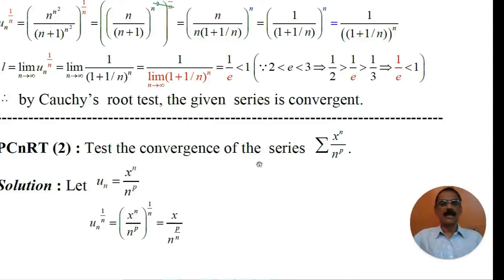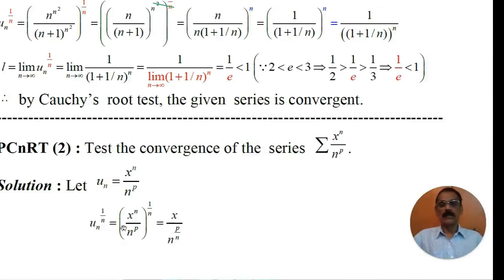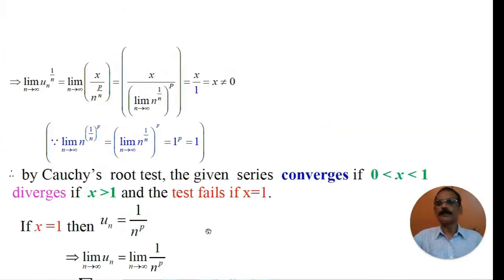Test the convergence of the series x to the power n divided by n to the power p. Let us consider the given series as series u_n. That is, u_n equals x to the power n divided by n to the power p. Now, the nth root of u_n equals the nth root of x to the power n divided by n to the power p. In the numerator, x to the power n to the power 1 by n gives x, as n cancels. So we have x divided by n to the power p by n.